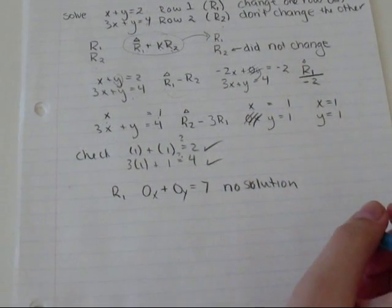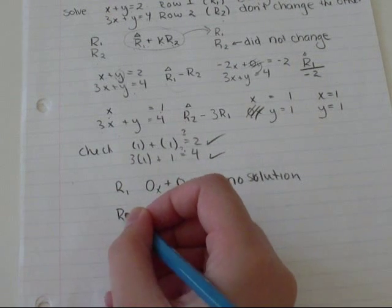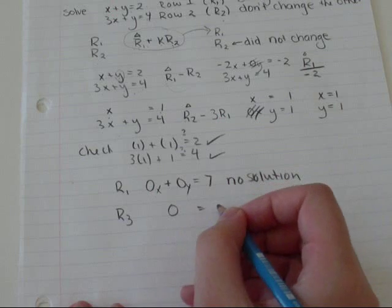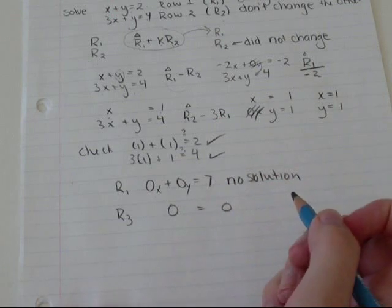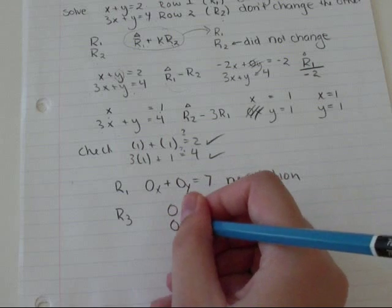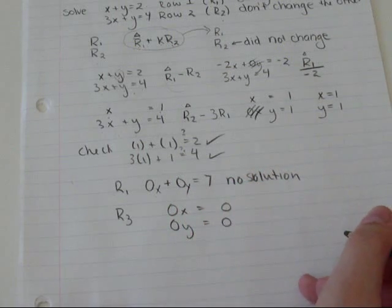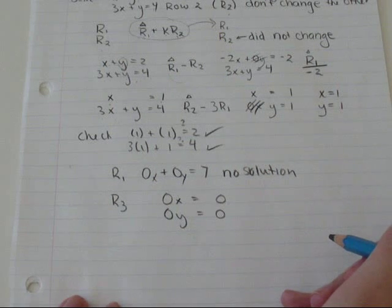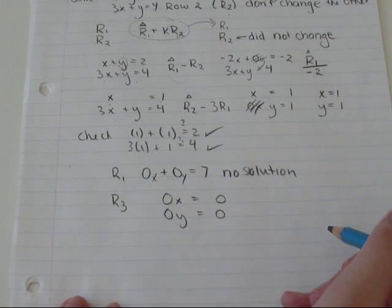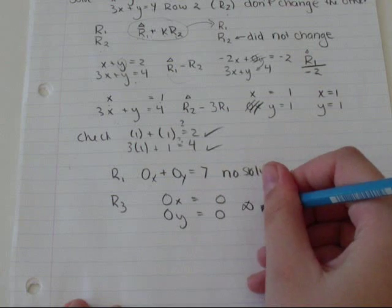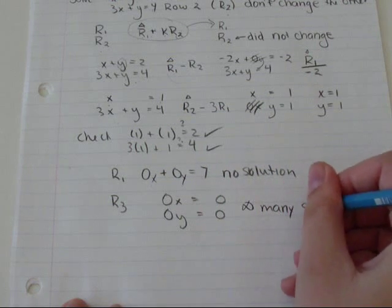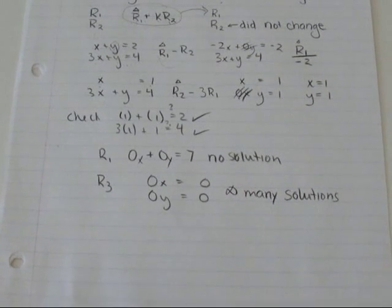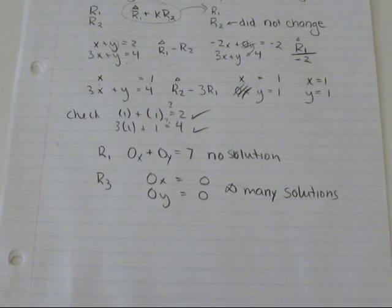Or you might get a situation where, let's say, row 3 has 0 equals 0. Well, if it's 0X equals 0 or 0Y equals 0, it doesn't matter what X or Y equals. 0 times anything is always 0. So we say that has infinitely many solutions. So I hope you found this video helpful. Have fun on your math.